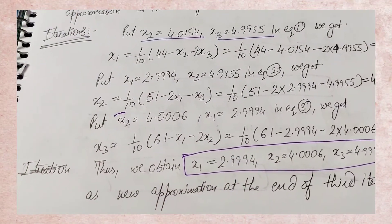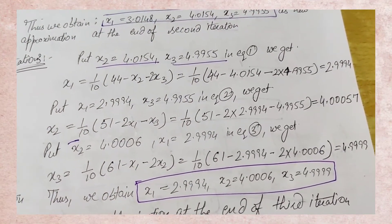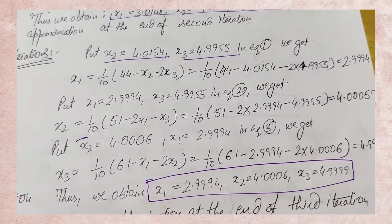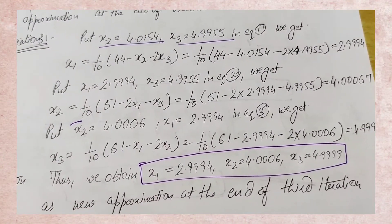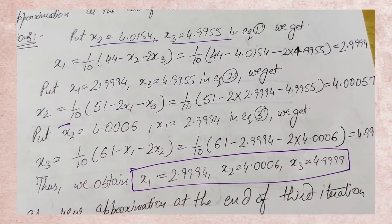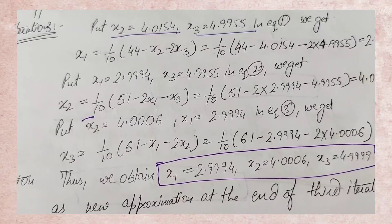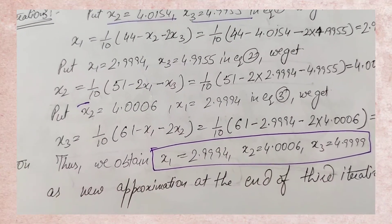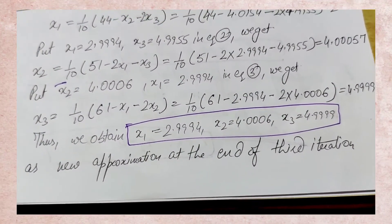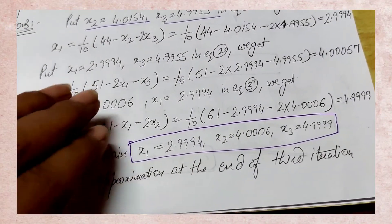For iteration 3, again use the latest values. Put x2 and x3 from iteration 2 into x1's equation — you get x1 = 2.9994. Then take x1 = 2.9994 and the old x3, put into x2's equation — you get x2 = 4.0057, which rounds to 4.006 at four significant digits. Then with x1 and x2 both updated, put into x3's equation — you get x3 = 4.9999. End of iteration 3: x1 = 2.9994, x2 = 4.006, x3 = 4.9999.